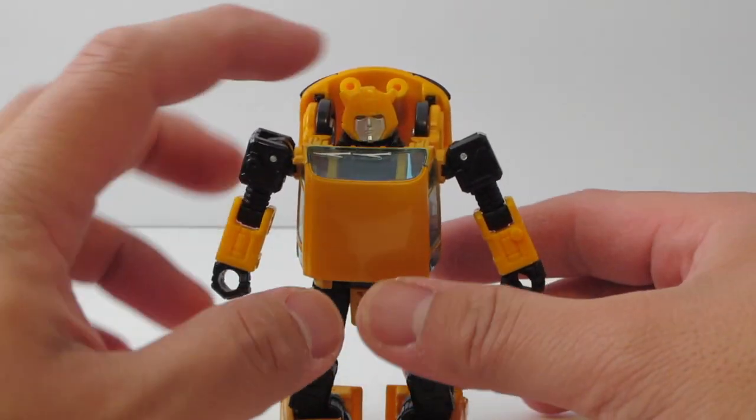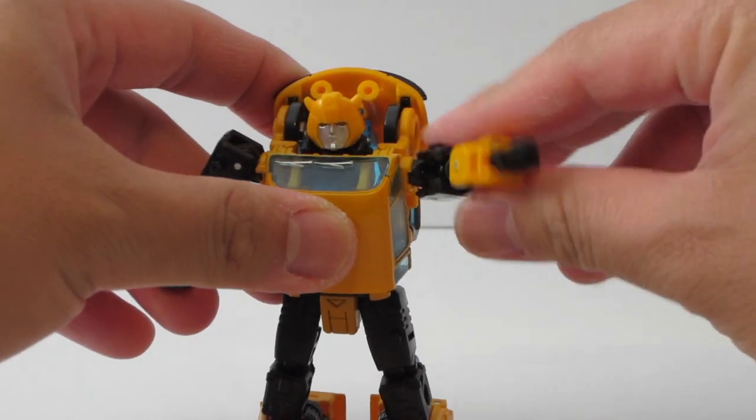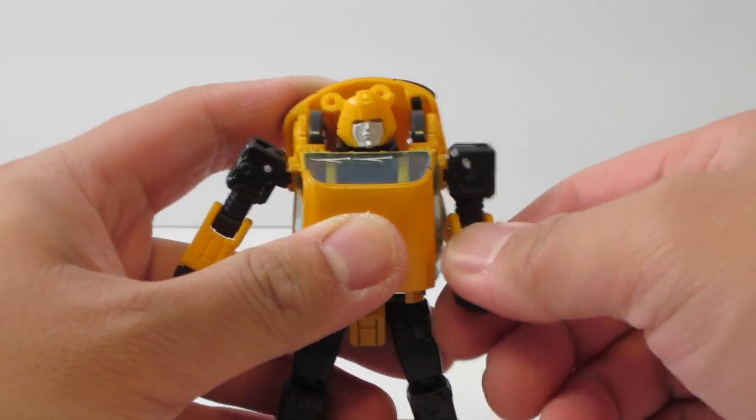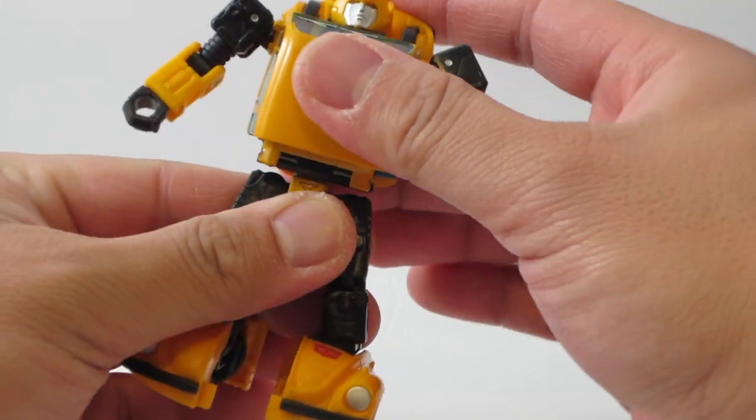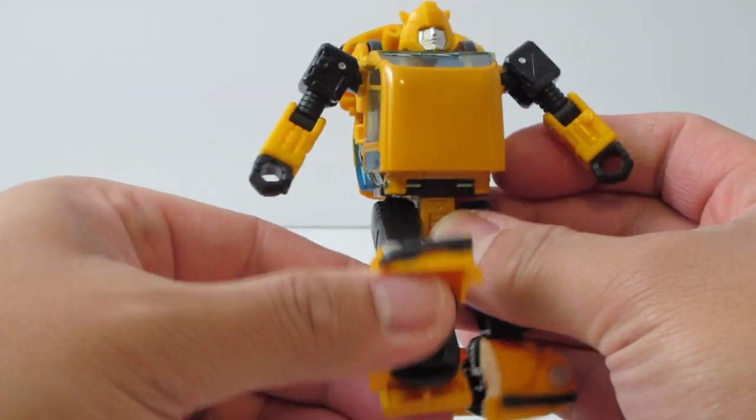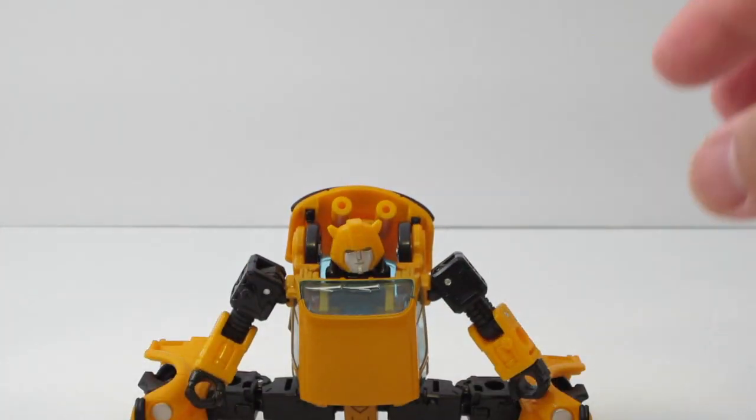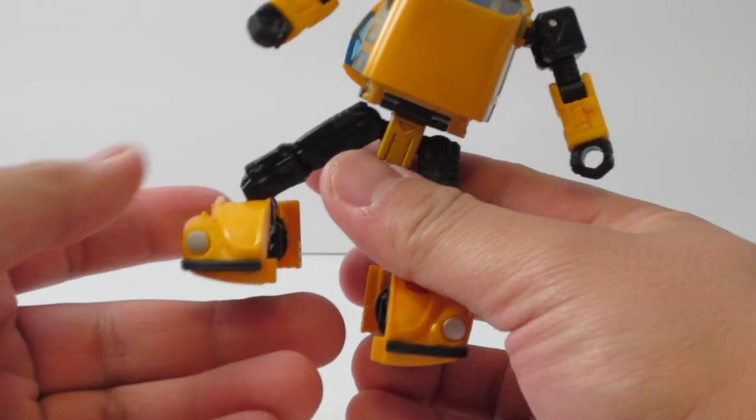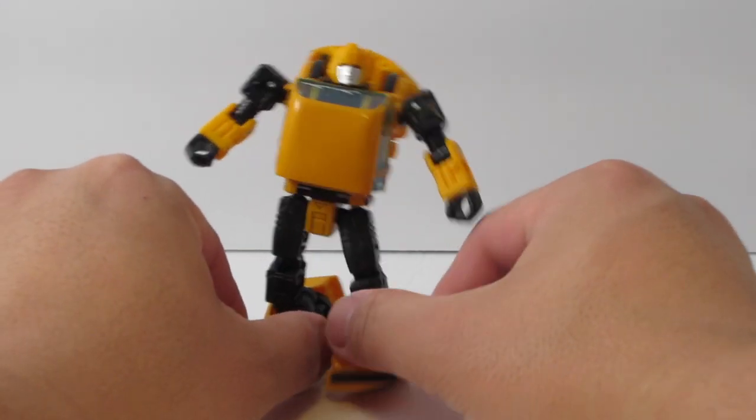That's my only gripe as far as the color. But articulation is the same. He can go up that far, 360 right here. Got the bicep swivel, it's pretty tight, just got him out of the box. Wrist swivel right here. He does have a waist right here, go 360. Head's on a ball joint, it's pretty tight but he can go 360 as well. He can kick that far, kick back that far. He can hit the splits just about. And he has articulation right here to do some ankle rockers for posing.